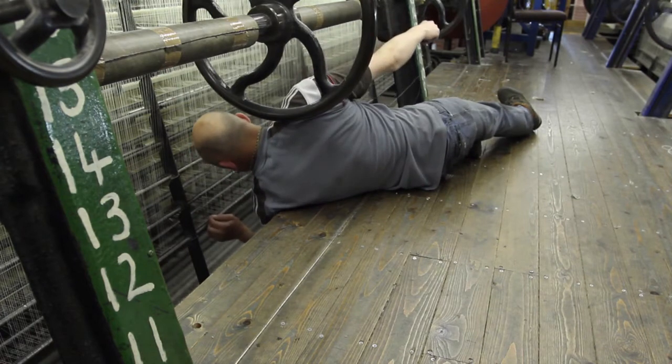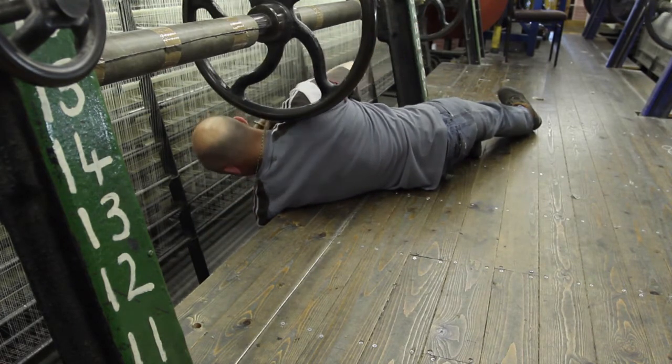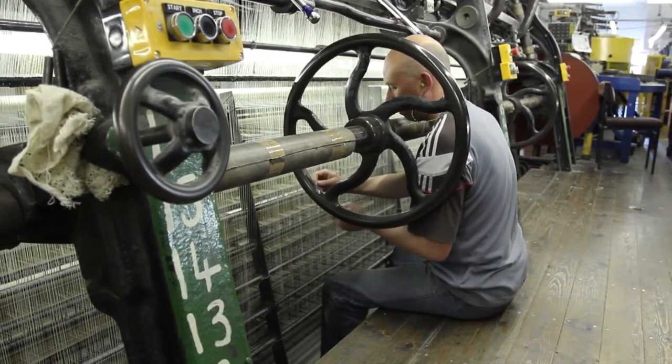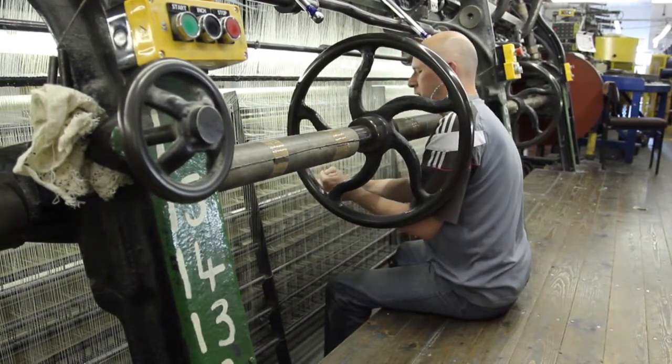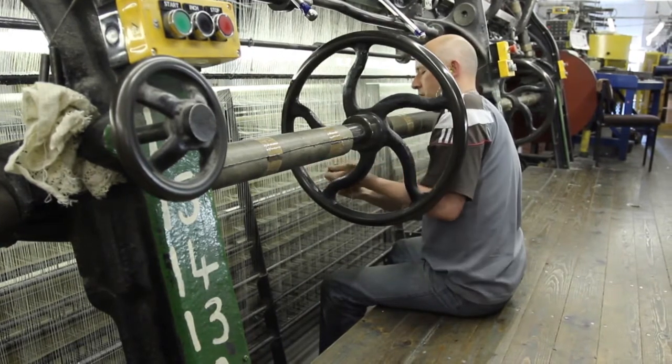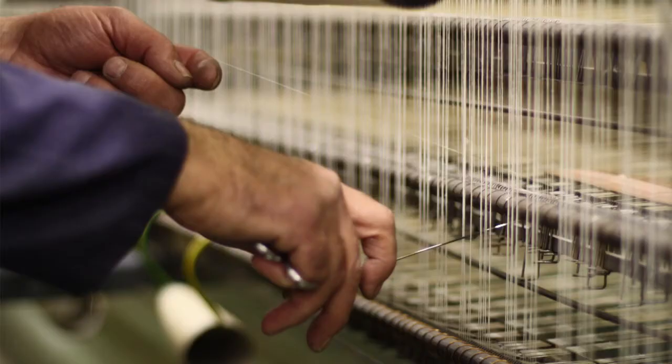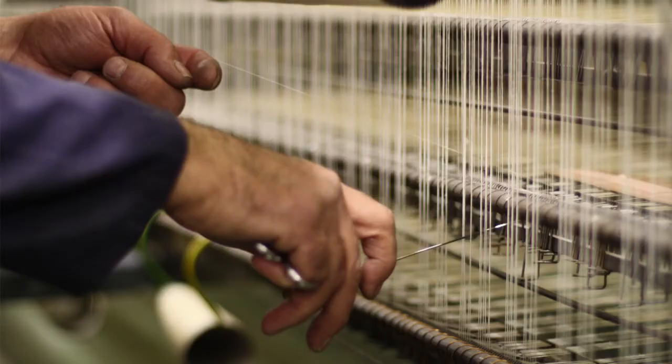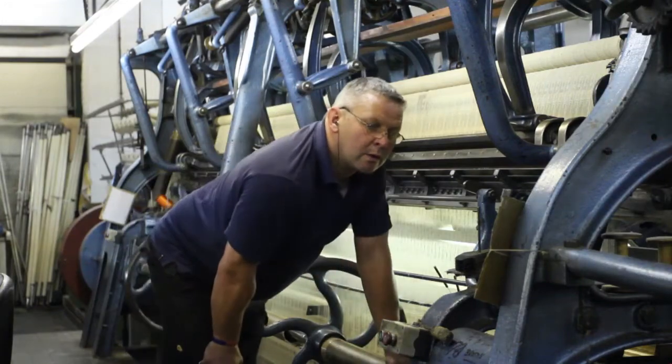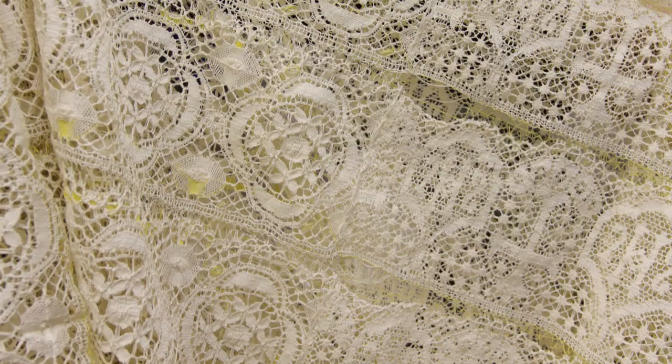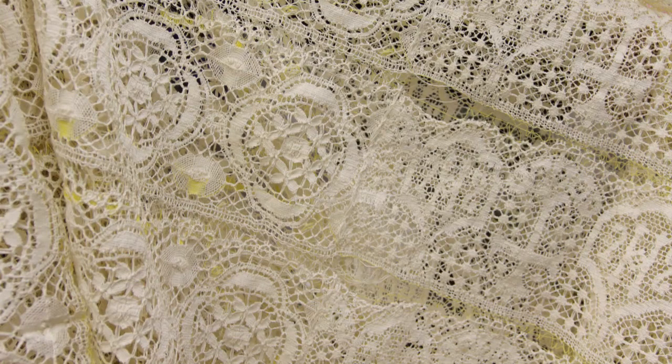The motion of the machine relies on the delicate, knowing touch of the twist hands and winders, who work with utmost dexterity and sensitivity to keep the machine running. The encounter between knowledge in the hand, reasoned knowledge and knowledge encoded in the machine is especially evident when a machine is changed from making one pattern to making another.